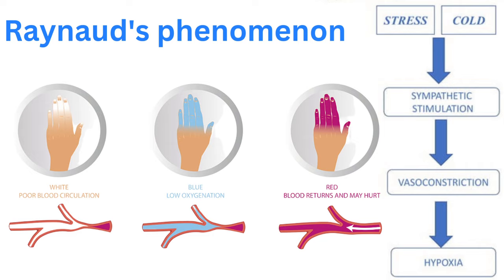In individuals with Raynaud's, there is a reduction in sympathetic immunoreactive neurons in the skin. This reduction contributes to a defect in the skin's ability to vasodilate, further complicating the condition.